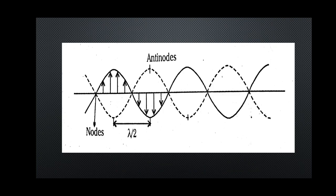In the stationary wave diagram, the solid line is the incident wave traveling forward and the dotted line is the reflected wave. The resultant is the stationary wave. The points where they intersect are nodes (amplitude = zero). Amplitude is the maximum displacement of the particle from its mean position. Stationary waves are produced in a sonometer and in resonance columns. In a sonometer experiment, the wire is fixed at both ends — forward wave and reflected wave mix, producing transverse stationary waves.